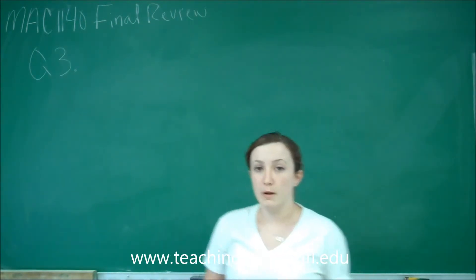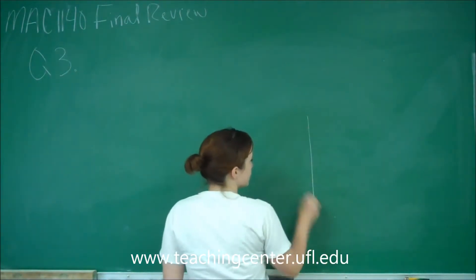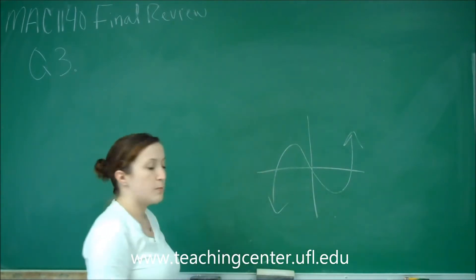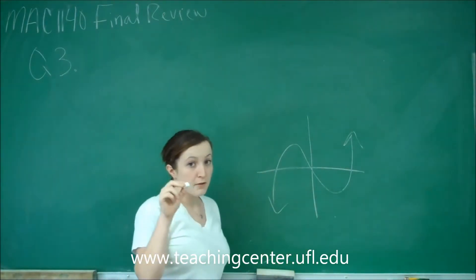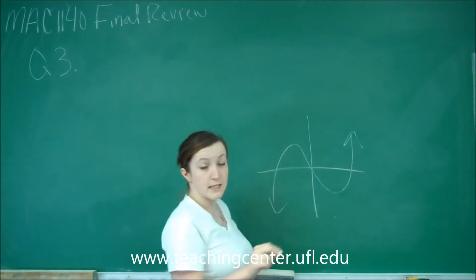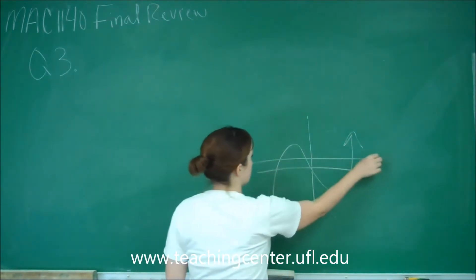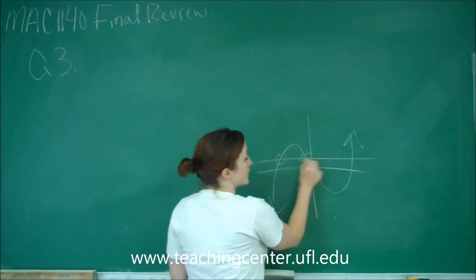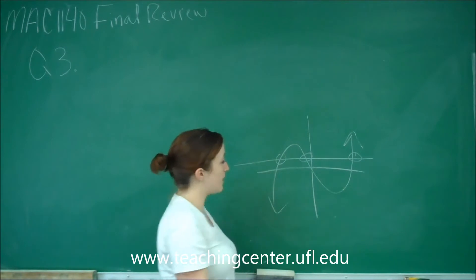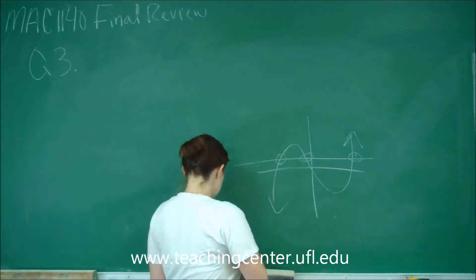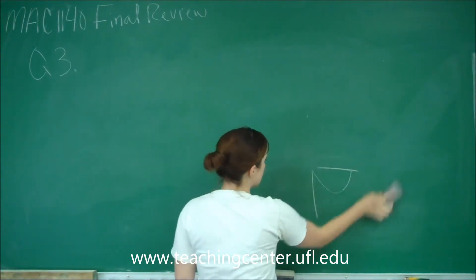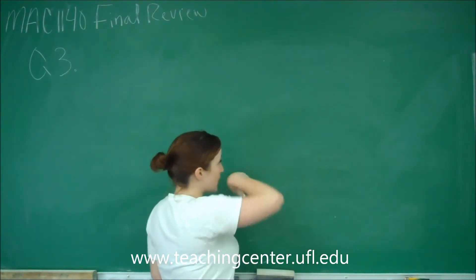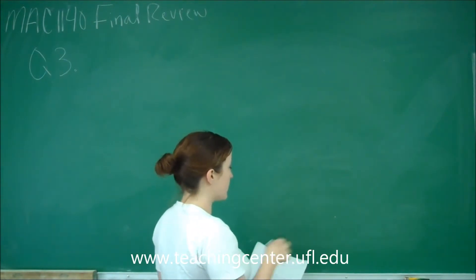One-to-one — we can test that if we're looking at a graph. We know a function is one-to-one if it passes both the vertical line test, which means it's a function, and the horizontal line test. The horizontal line test means we only want to intersect it in one place. This function here is obviously not one-to-one — we intersect it in three places. So that's how to tell if it's one-to-one when looking at a graph.